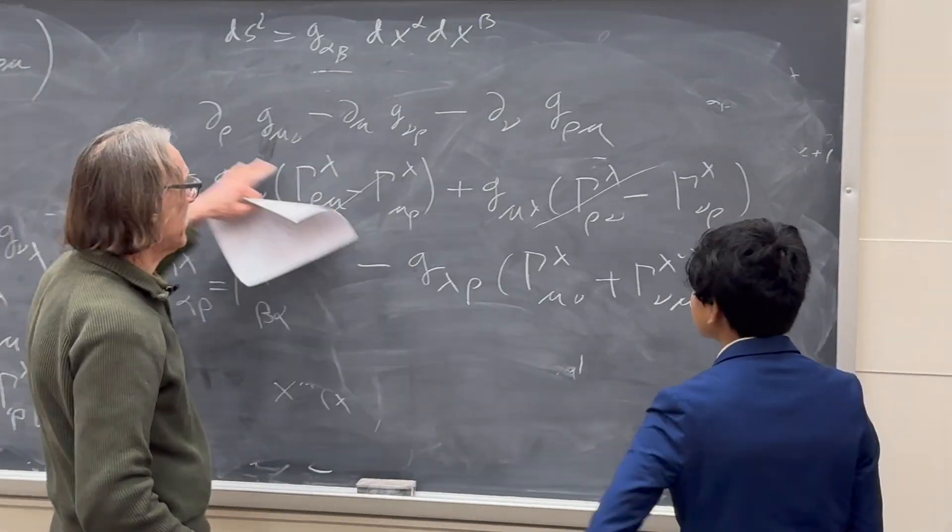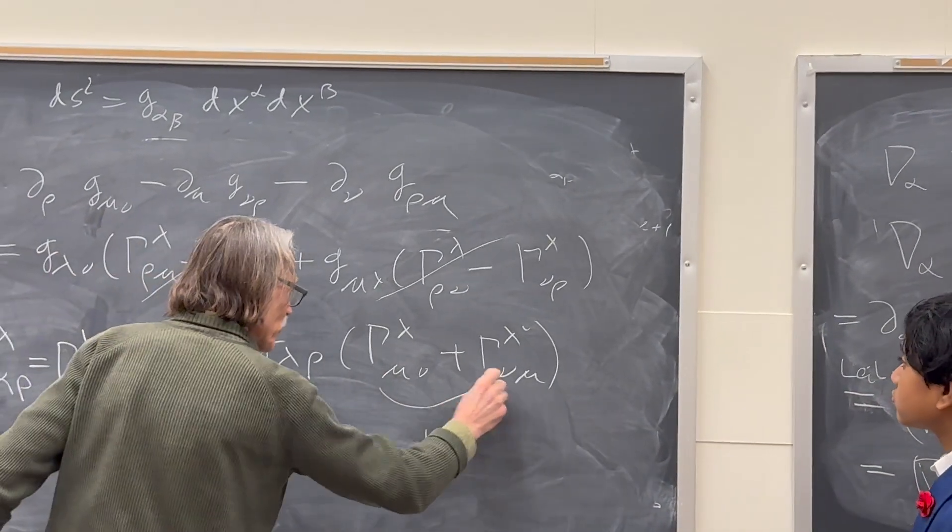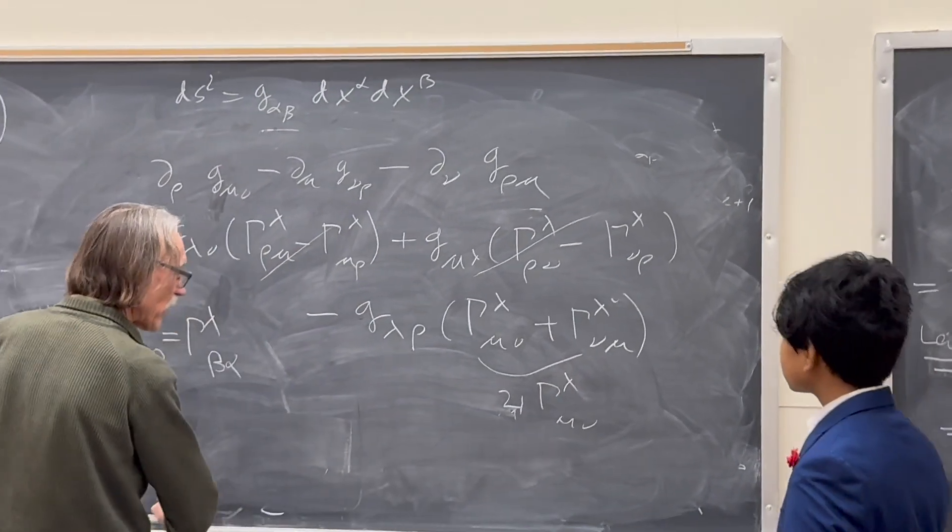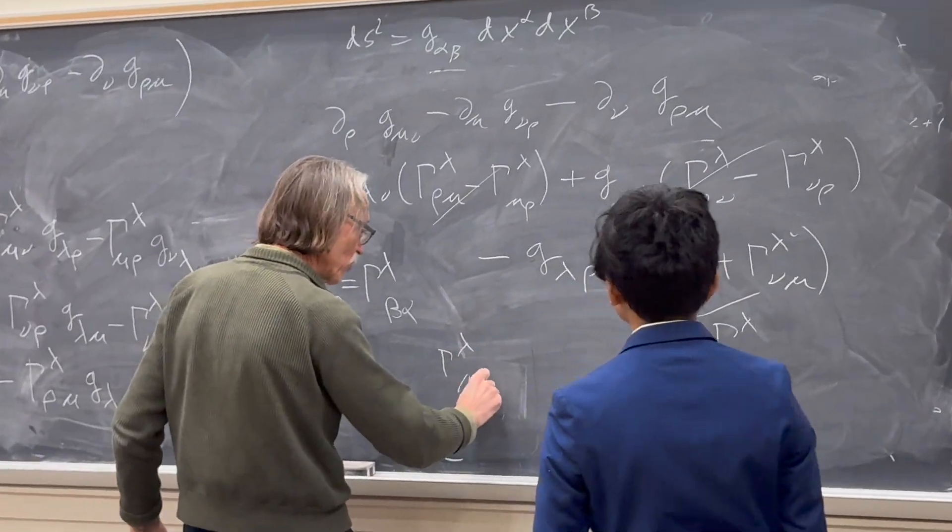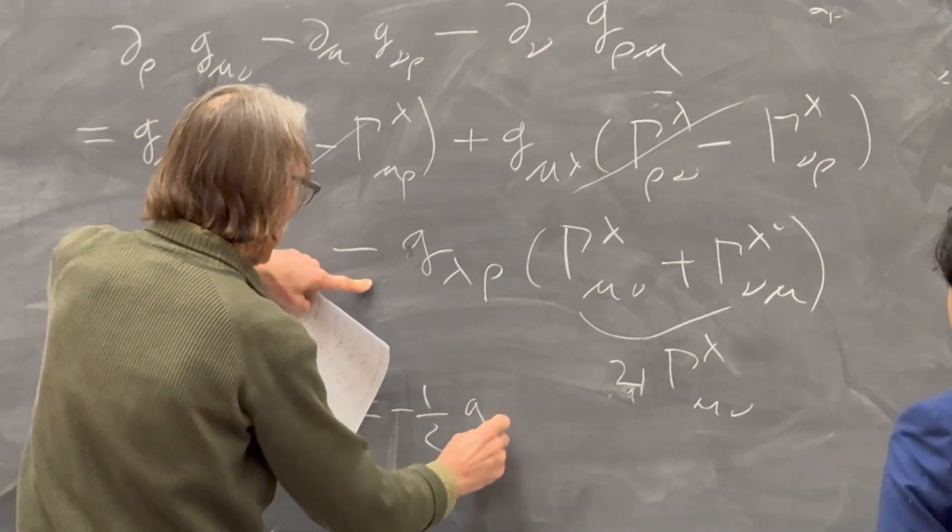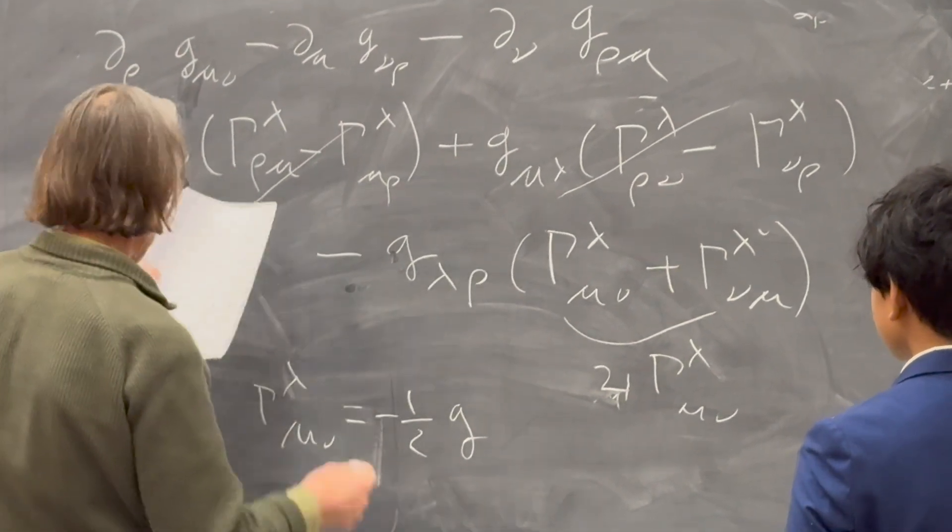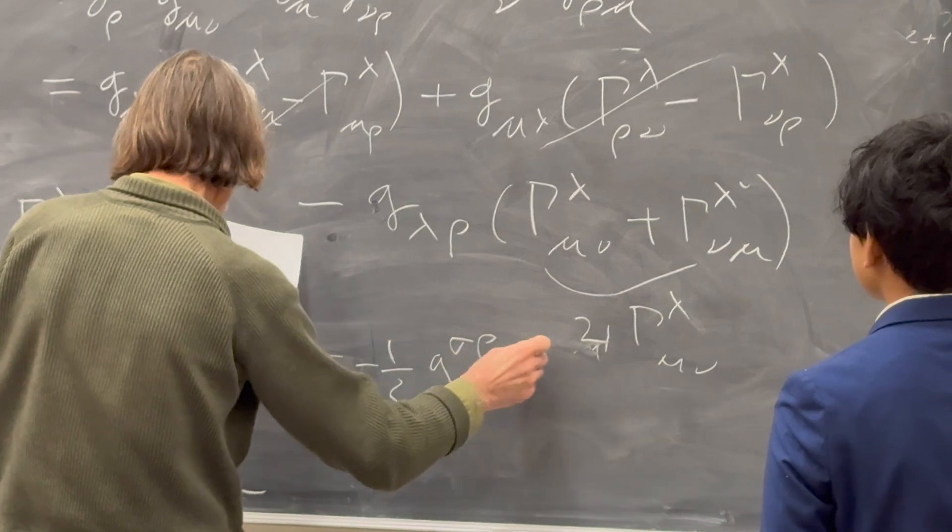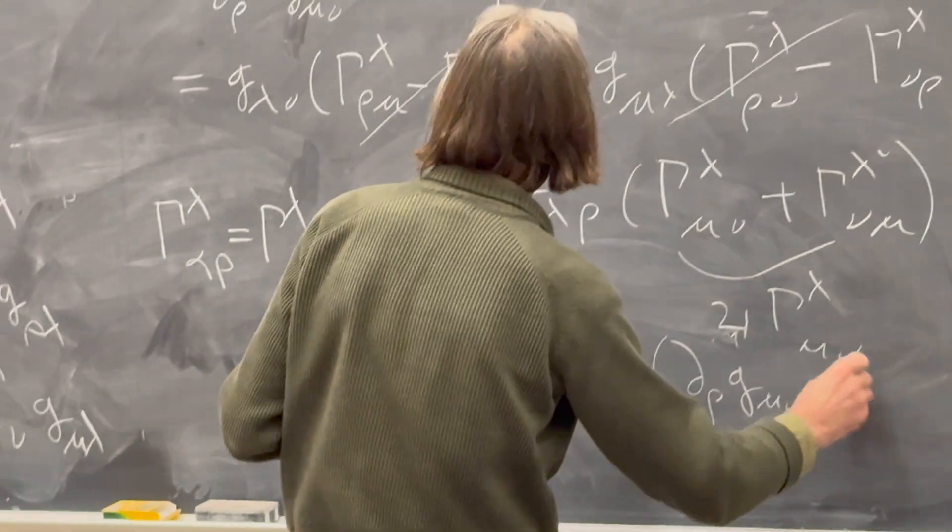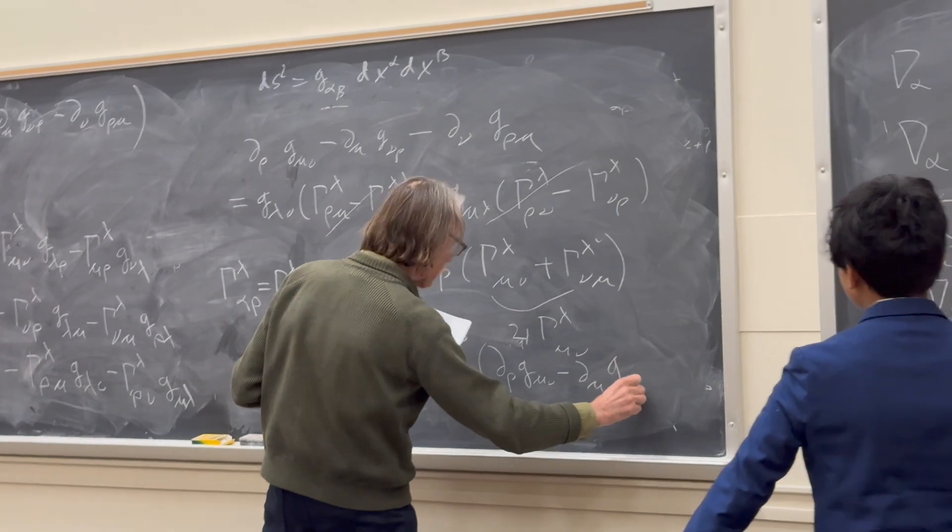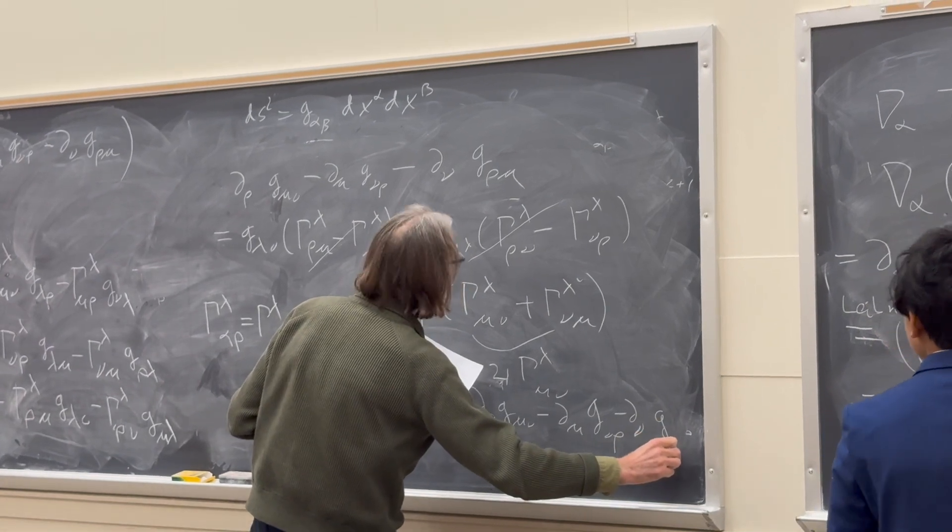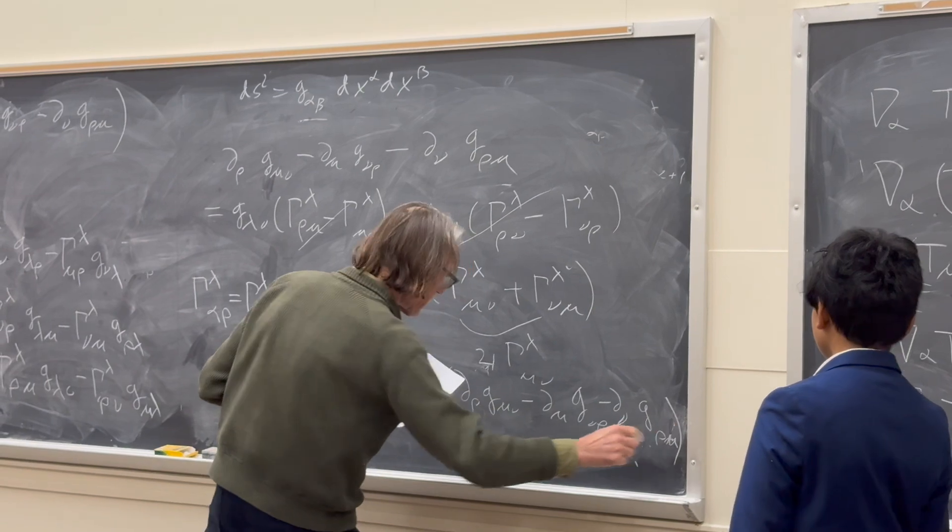And you have only this. So you have to act with the inverse of this. And these are the same. So this is 2Γ^λ_νμ. And then what you get is that Γ^λ_νμ is equal to -1/2 times the inverse of this, that is g with upper indices σρ times ∂_ρ g_μν minus ∂_μ g_νρ minus ∂_ν g_ρμ.